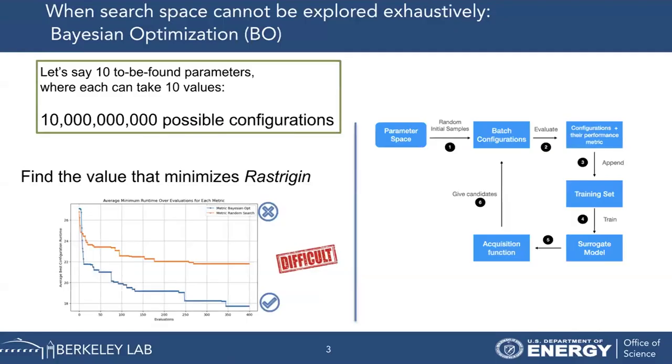Starting on the left side of the slide, imagine that our application has 10 parameters and each parameter can take up to 10 values. This creates a search space of 10 billion possible configurations. We cannot exhaustively explore all of them, so this is an optimization problem — we want to find the configuration that minimizes the runtime.